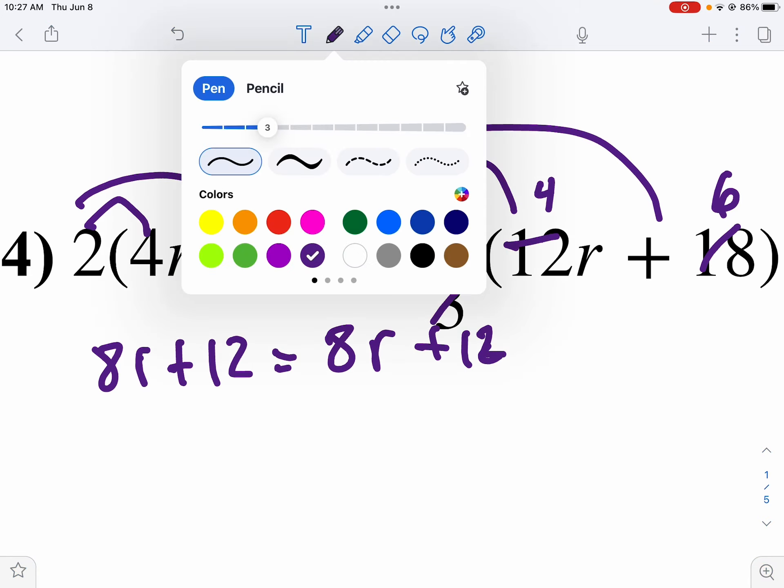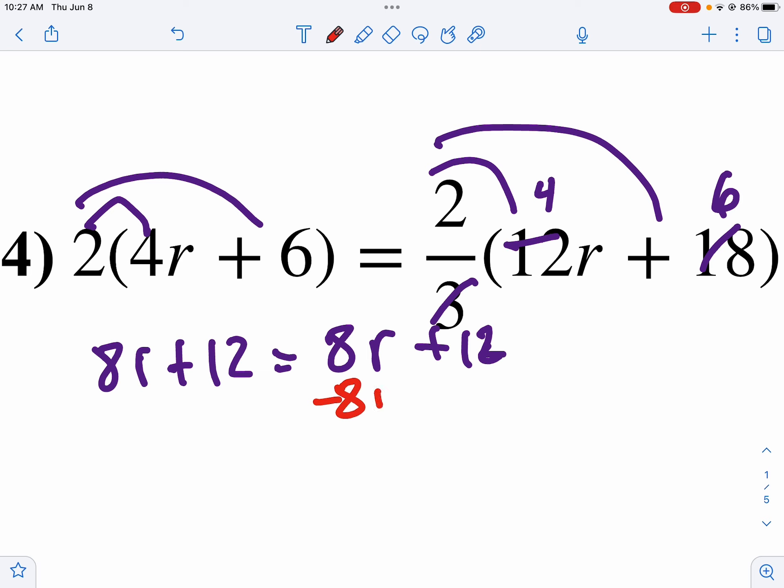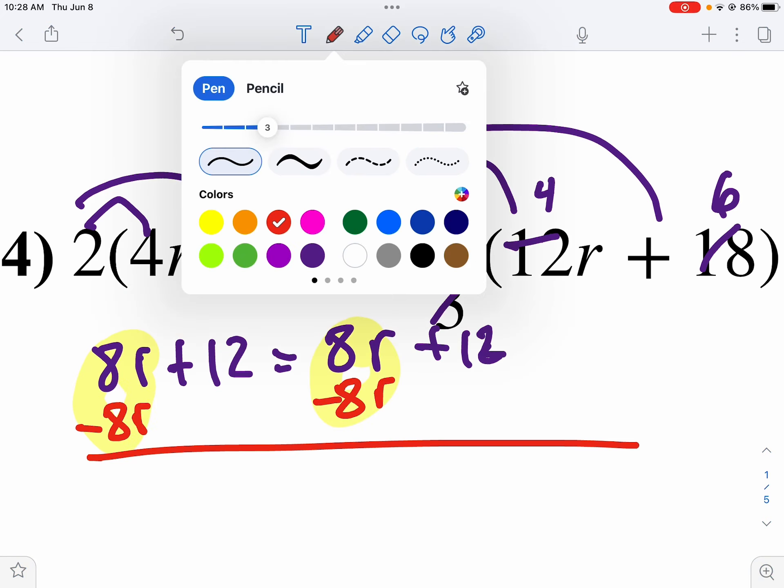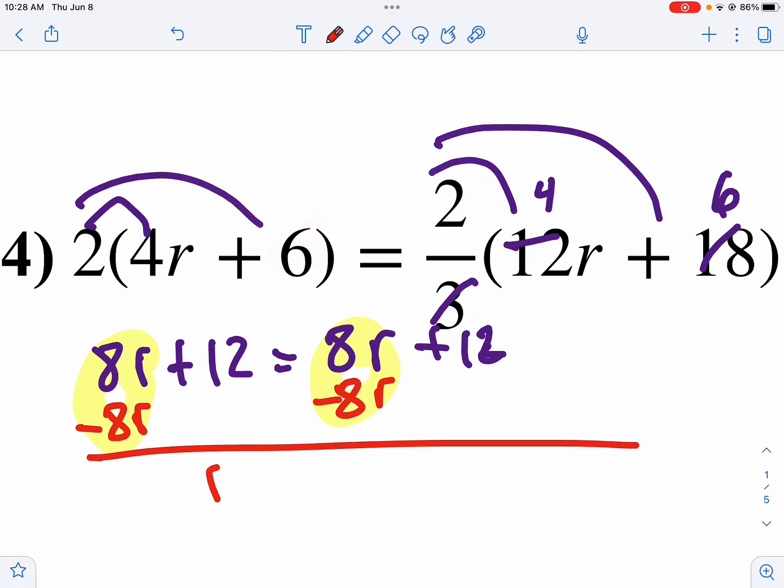Now I'm going to minus my 8r from both sides. And just like number 3, they cancel, don't they? So I bring down 12 equals 12.